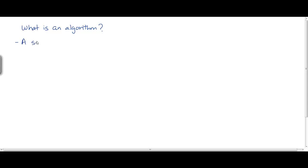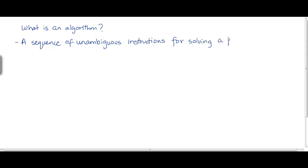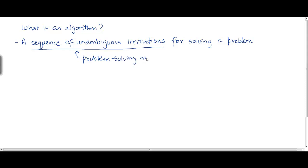So, it is a sequence of unambiguous instructions for solving a problem. This sequence of unambiguous instructions is basically the method — a problem-solving method — that actually solves the problem. So, an algorithm, in other words, is just a problem-solving method.